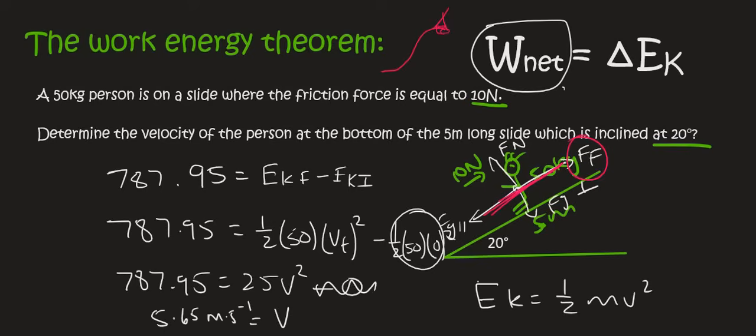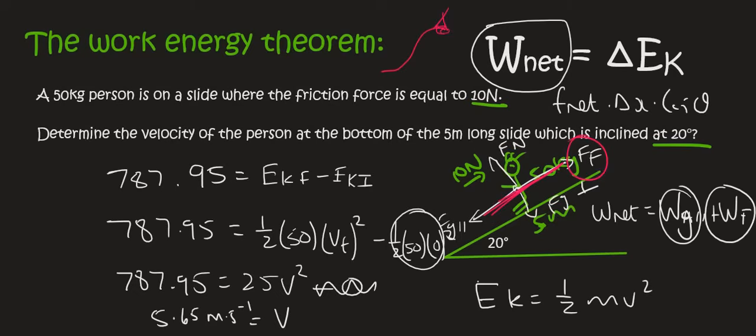And so guys, always remember that the W net part, I'm using the F net change in X times cos theta method. But there is that other method that we looked at where you could say W net is going to be equal to W A for force applied, or gravity parallel, plus W friction. And then we went and did each of those separately, and then you combine them. Both ways are going to give you the same answer, so you must please make sure that you understand the differences, and you are welcome to do whichever one you like.